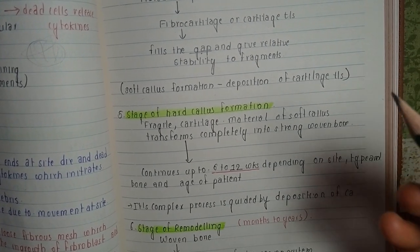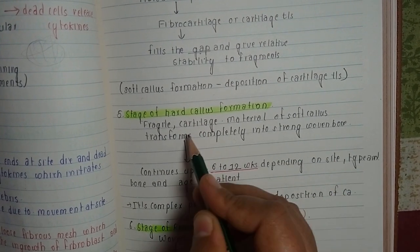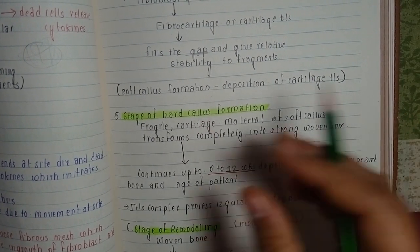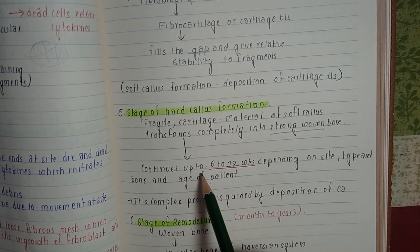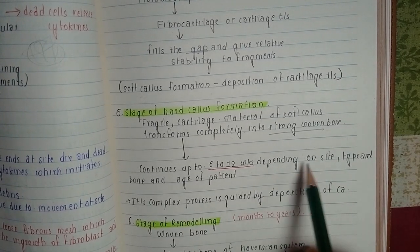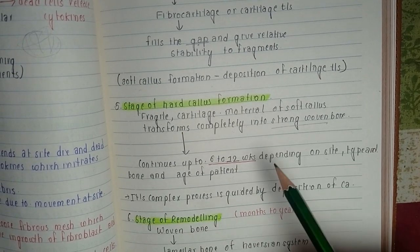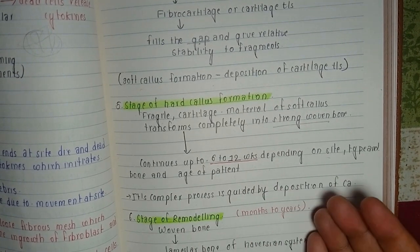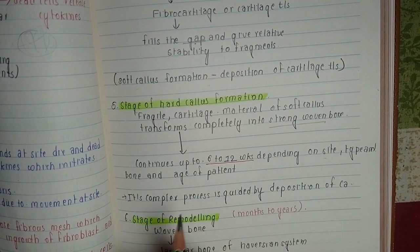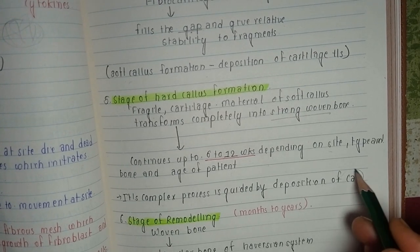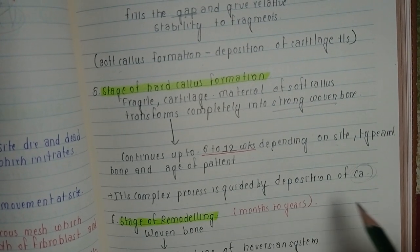Since cartilage is fragile, the soft callus then transforms into strong woven bone, which continues up to six to twelve weeks depending on the site, type of bone, and age of the person. The older the person, the later the formation of hard callus. This is a complex process guided by the deposition of calcium.